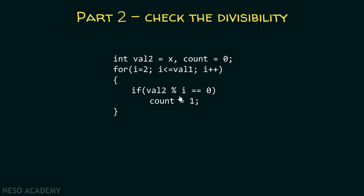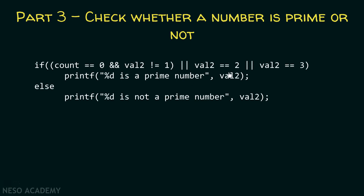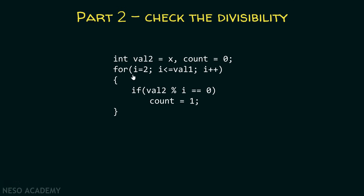We check whether x is divisible by any number less than or equal to the square root of x. So we run this for loop from 2 to the square root of x, and then check whether x is divisible by any of those numbers. If it is divisible, we set the count value to 1, which is initially set to 0. The next step is to check whether the number is prime or not. If count is 1, then it is not a prime number; else if count is 0, then it is a prime number.